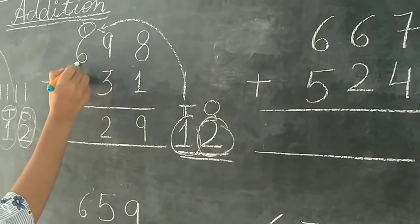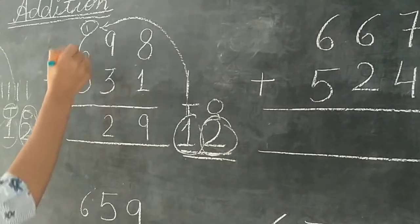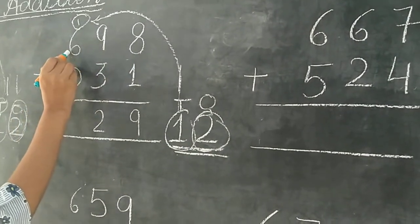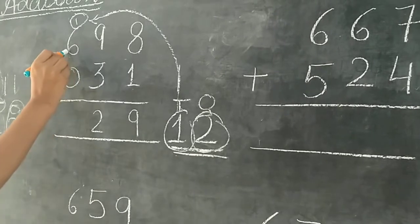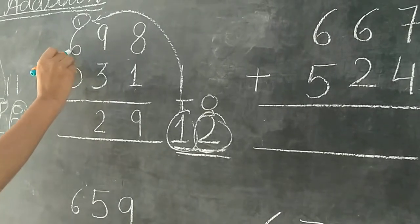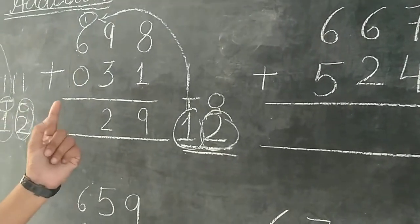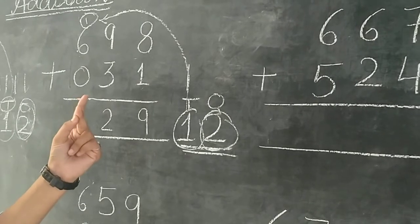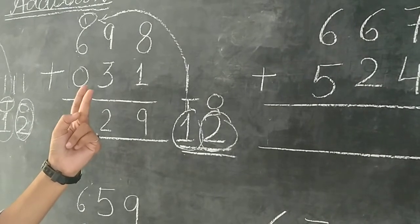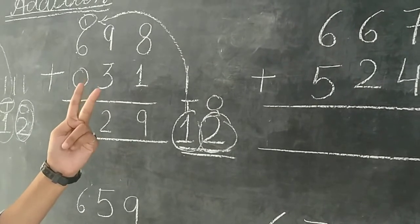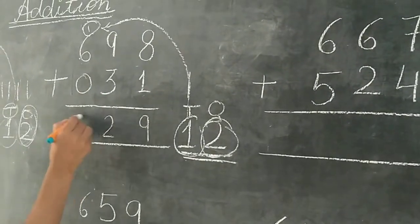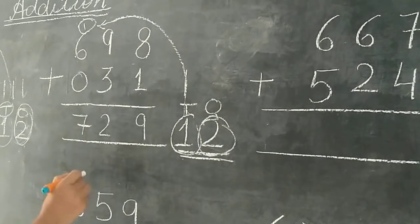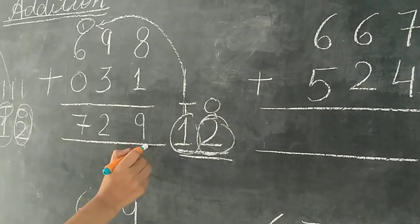1 plus 6. 1 ke baad humme 6 aur count karna hai. You have to count: 1, 2, 3, 4, 5, 6, 7. So we write here 7. The answer is 729.